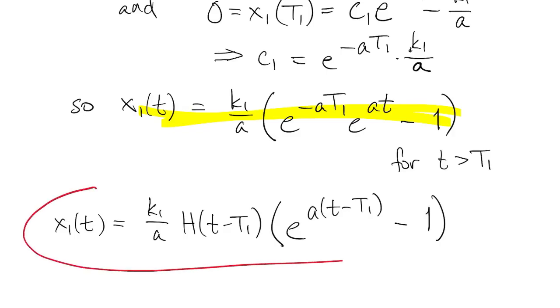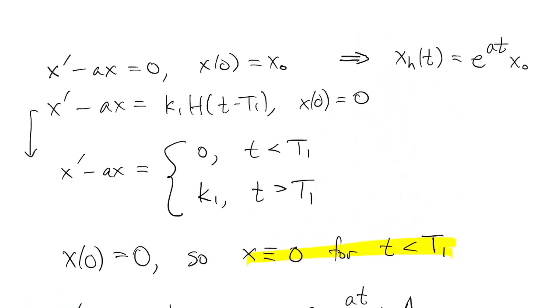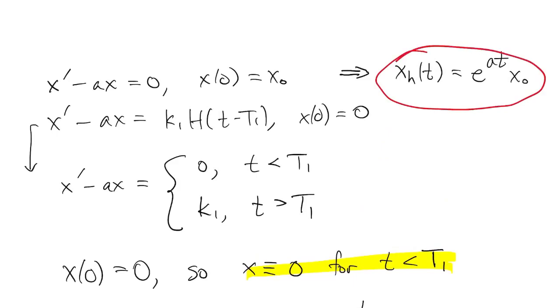So now we have x1. We already found the xh. If we had more terms, we would find x2, x3, but they all look essentially like x1.